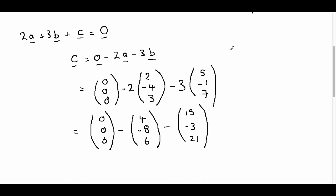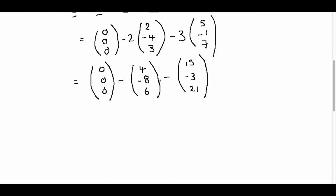Now all we need to do is take away the components. So we have 0, minus 4, minus 15. We have 0, minus minus 8, minus minus 3, and 0, minus 6, minus 21.